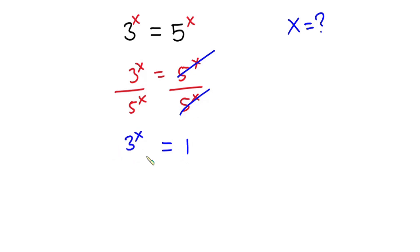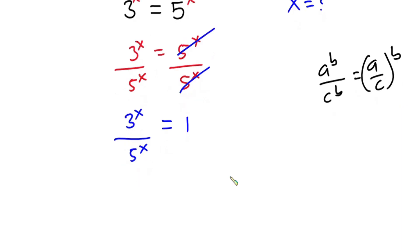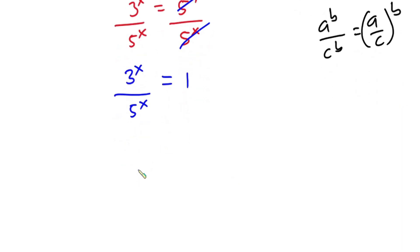Now we have the right-hand side to be 1, then the left-hand side to be 3^x over 5^x. Now if I have a^b over c^b, then I can write this as (a/c)^b.